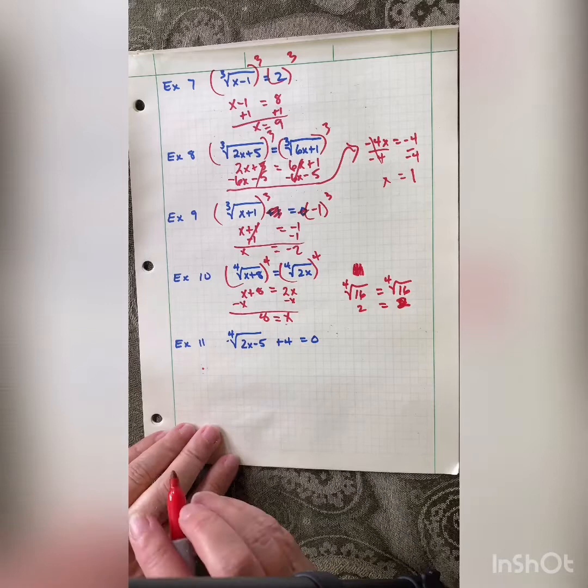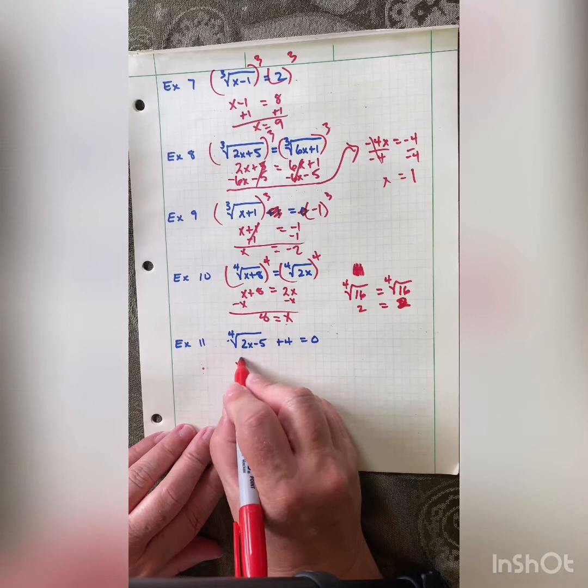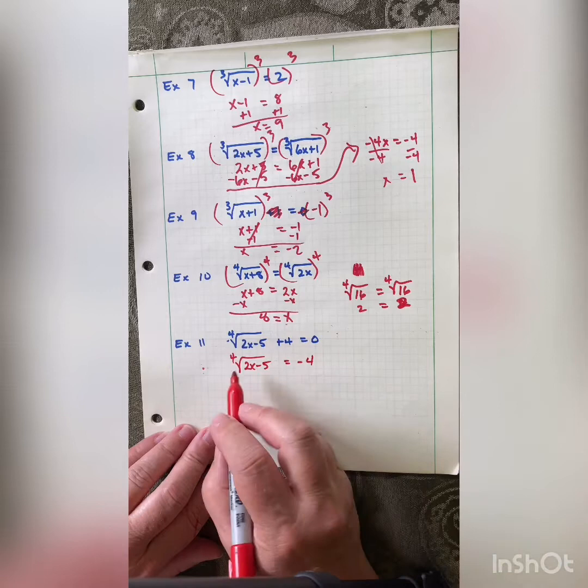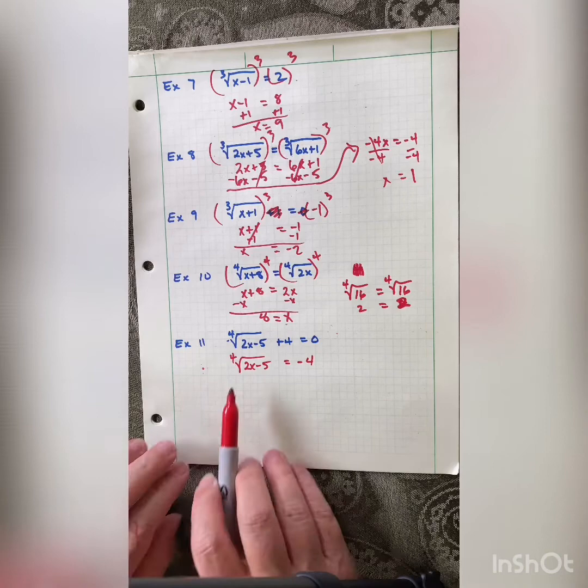Last one: isolate to get the 4th root of (2x − 5) = −4. Notice this is an even index — we cannot have a principal even root equaling a negative number. So we know immediately that this one is no solution.